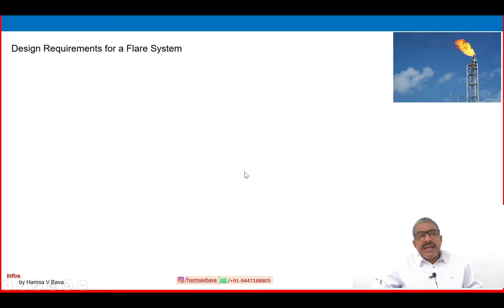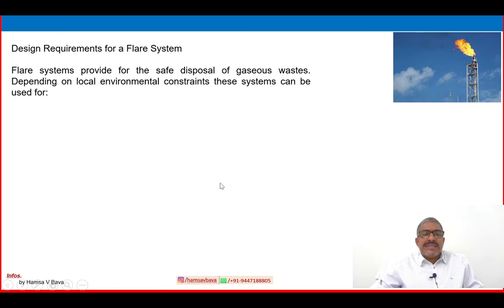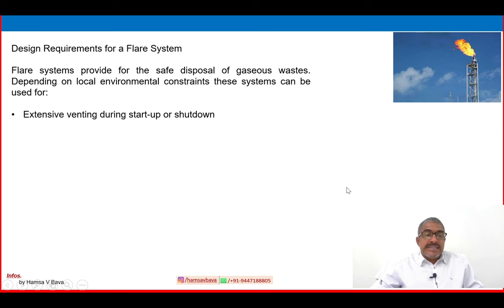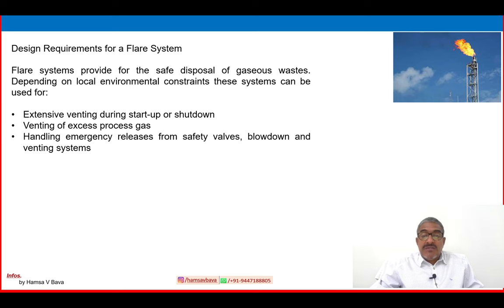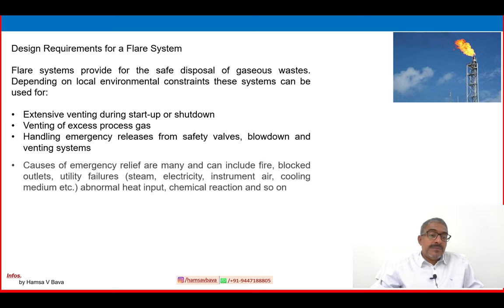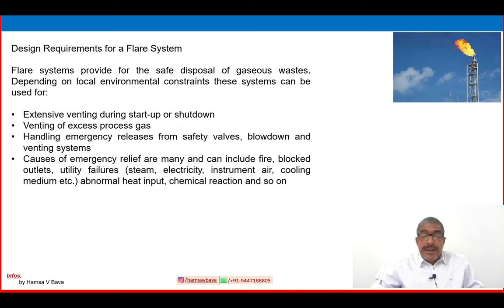Let us discuss design requirements for a flare system. A flare system provides for the safe disposal of gaseous wastes. Depending on local environmental constraints, it can be used for extensive venting during startup or shutdown, and for handling emergency releases from safety valves, blow down, and venting systems. Causes of emergency relief are many and can include fire, blocked outlet, utility failures — steam, electricity, instrument air, cooling media — abnormal heat input, and chemical reactions.